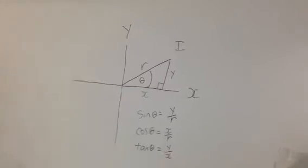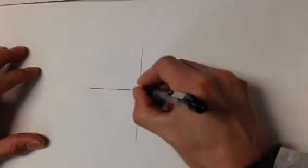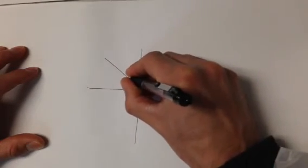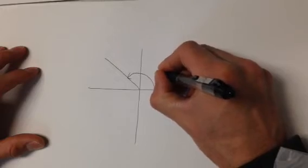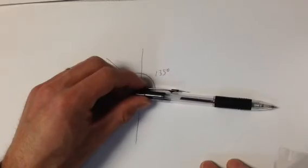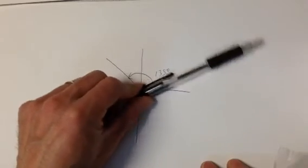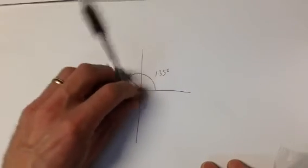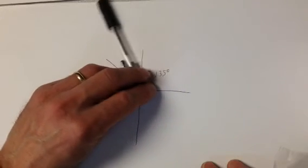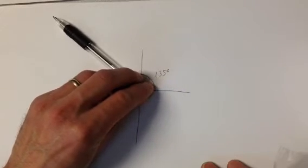The advantage of doing this is it allows us to deal with a case where our angle is greater than 90 degrees. Consider this angle here. It's 135 degrees. Starting again, we always start at the positive side of the x-axis, and we rotate counter-clockwise. So starting here, we rotate 135 degrees counter-clockwise to arrive here.